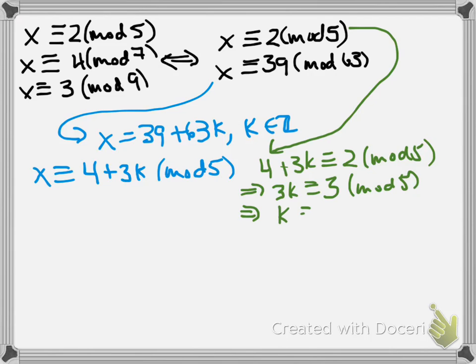3k is congruent to 3 mod 5. Let's take a closer look at that. I subtracted 4 from both sides, that gave me minus 2, but minus 2 is the same as 3 mod 5. And then since 3 is co-prime to 5, we can cancel the 3's from both sides and get that k has to be congruent to 1 mod 5.